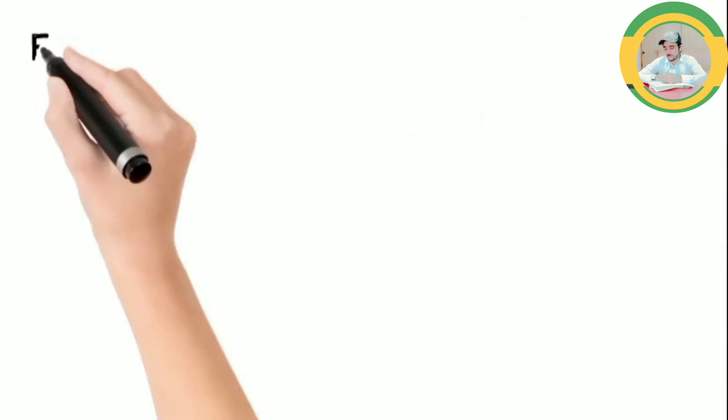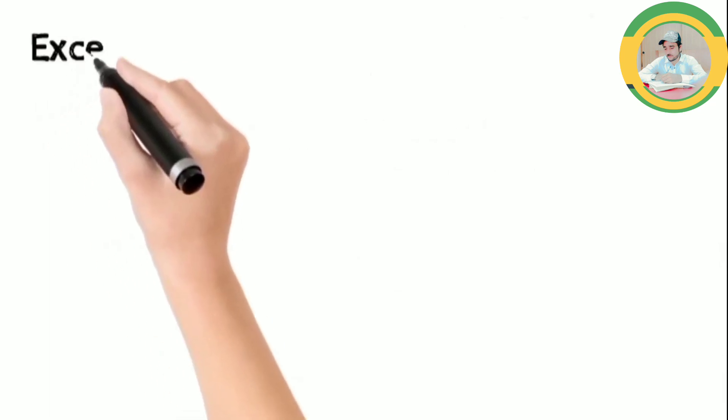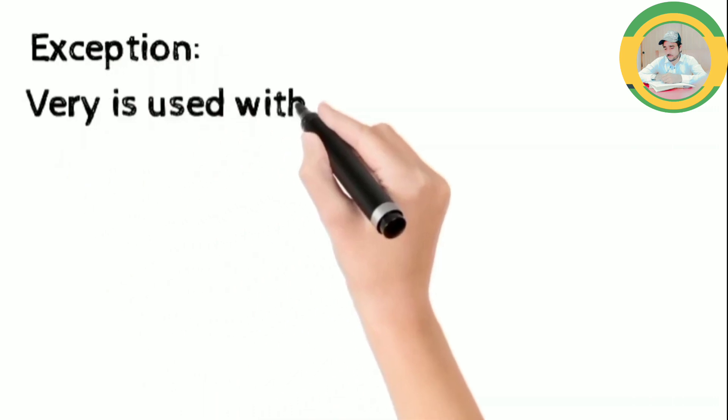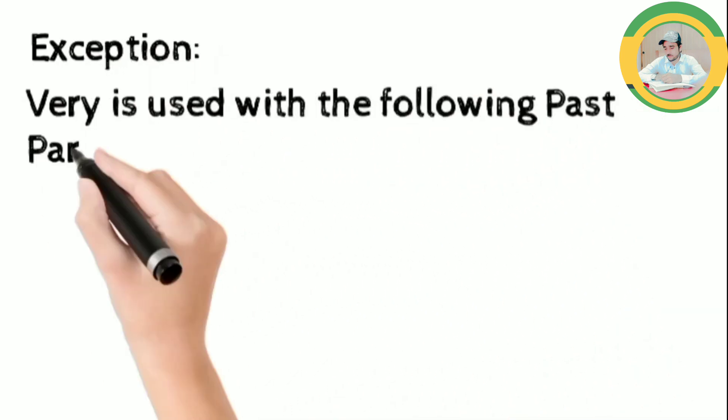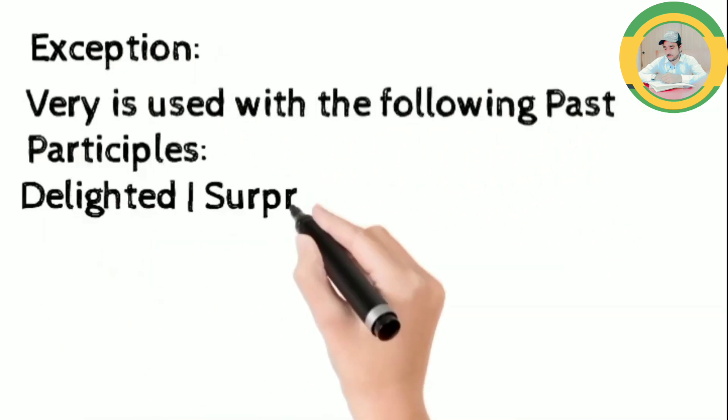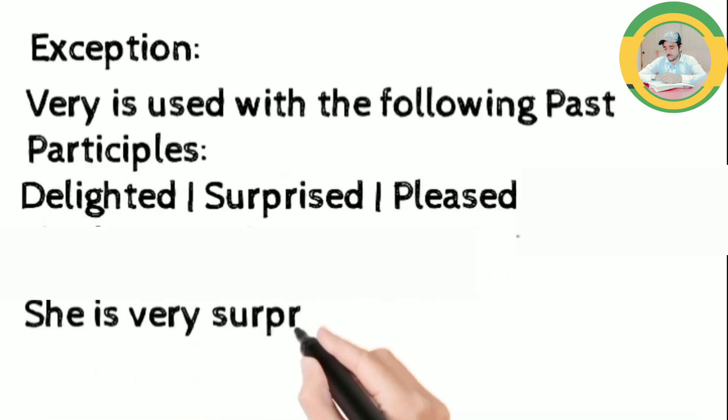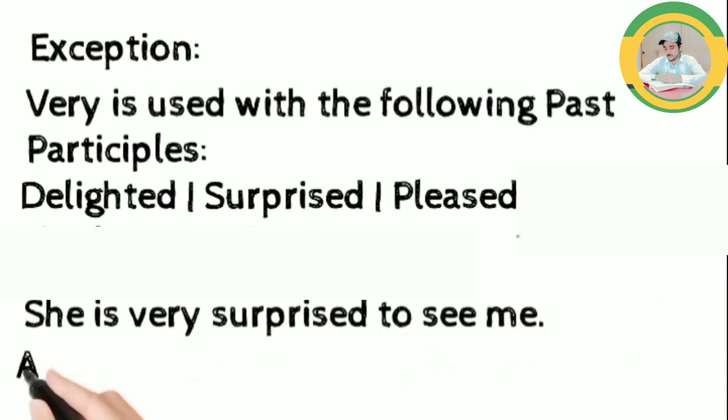Now we will come to know an exception. Very is used with the following past participles. For example, she is surprised to see me. After work out, we are very tired.